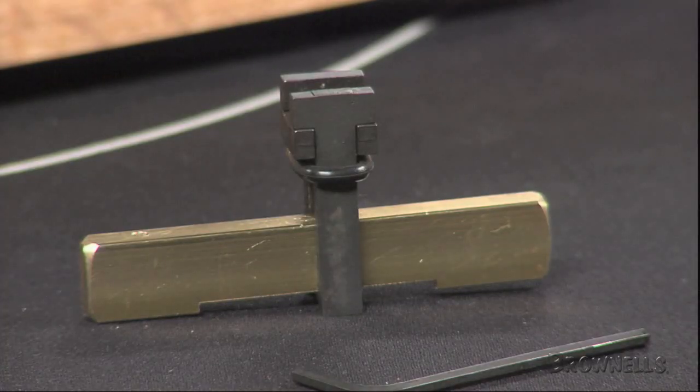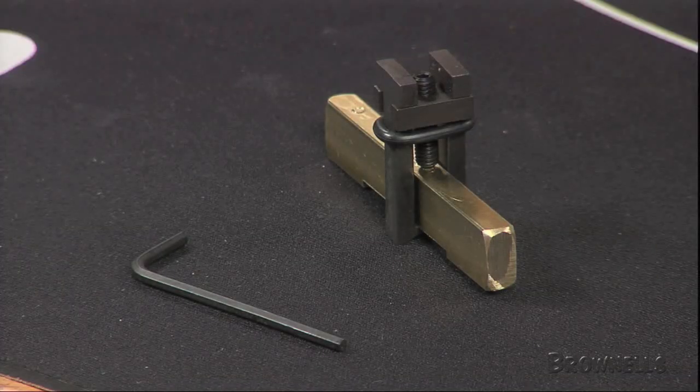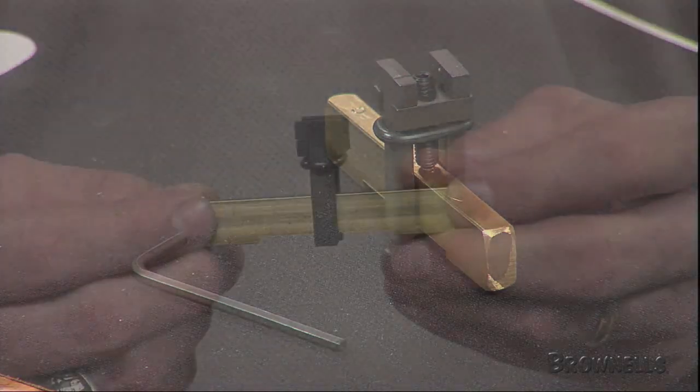The Murray Vent Rib Tool is an easy to use device that can be attached in seconds and can effectively straighten dents from ventilated ribs.